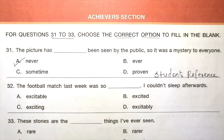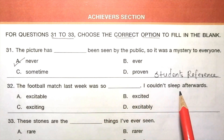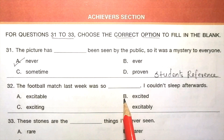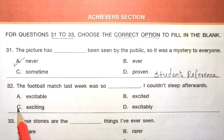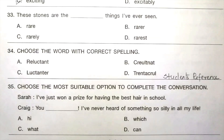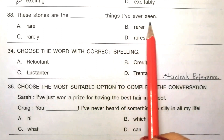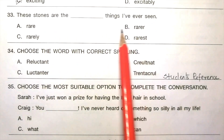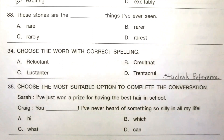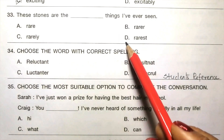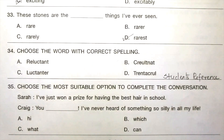Question 32: 'The football match last week was so dash. I wouldn't sleep afterwards.' Options: excitable, excited, exciting, excitably. The answer is C, exciting. 'The football match last week was so exciting. I wouldn't sleep afterwards.' Question 33: 'These stones are the dash things I have ever seen.' Options: rare, rarer, rarely, rarest. The answer is D, rarest. 'These stones are the rarest things I have ever seen.'